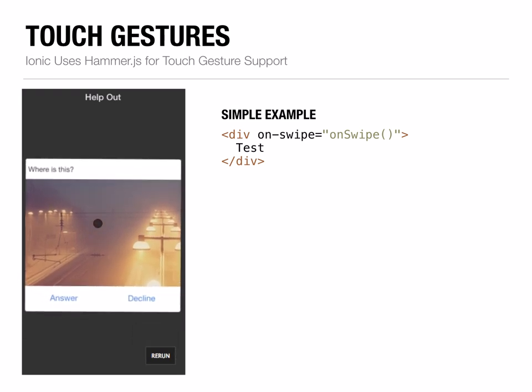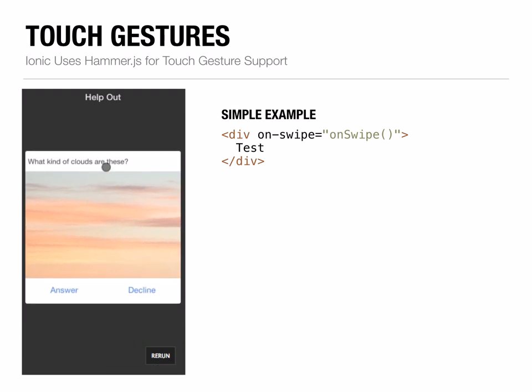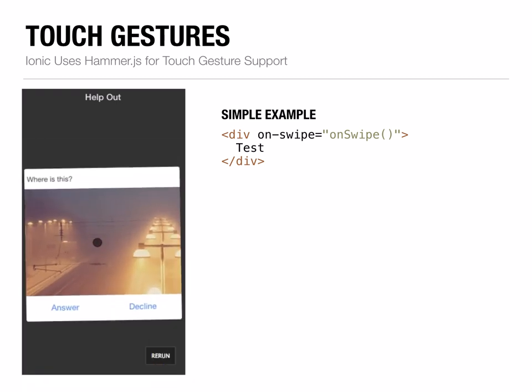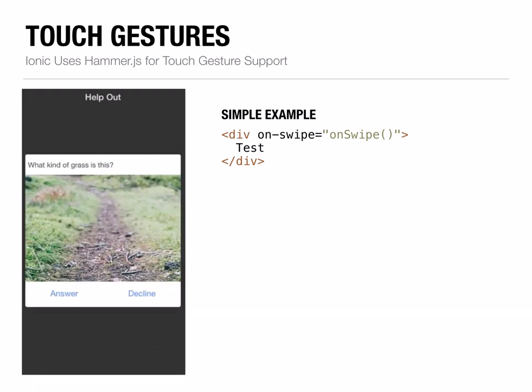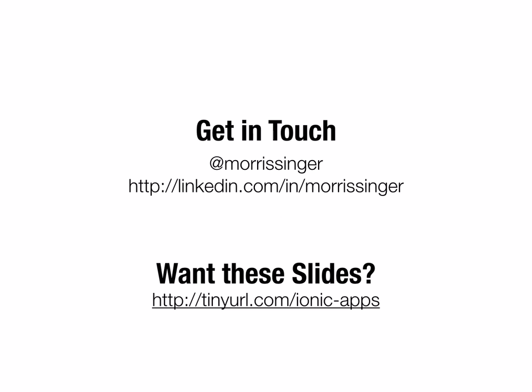The last thing I'll show you is touch gestures. Ionic defines a lot of great touch gestures available as events you can listen for. You can have an event handler on your scope and hook it up with a directive named after the type of gesture you're listening for, making it very easy to attach event listeners to directives on your DOM. The card swipe is a more complex example showing off the power of this paradigm — Ionic has created and packaged it as a separate GitHub repo. Feel free to reach out to me at the URL provided alongside this video. Thank you very much for listening.